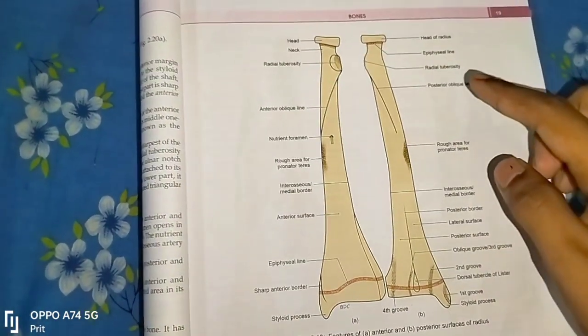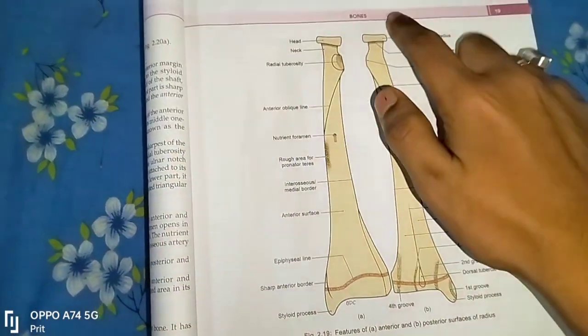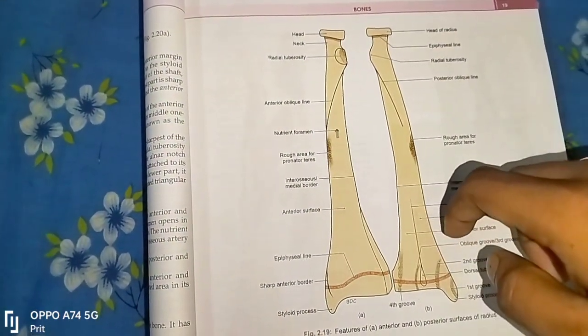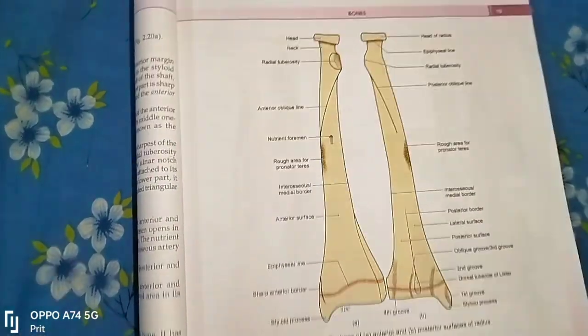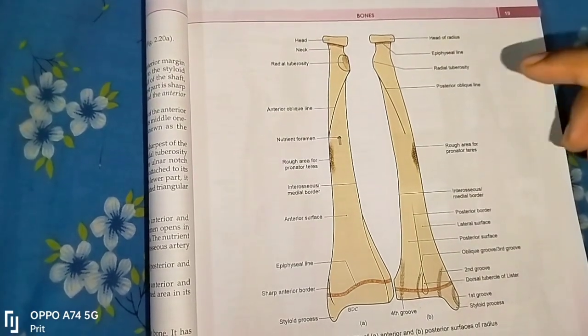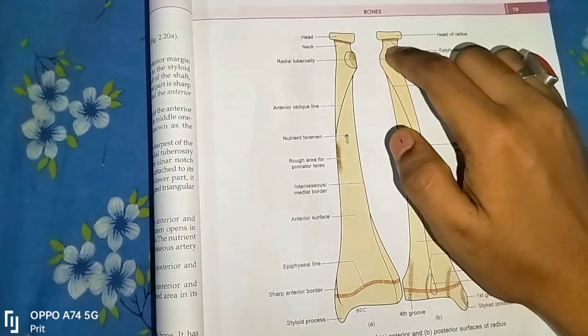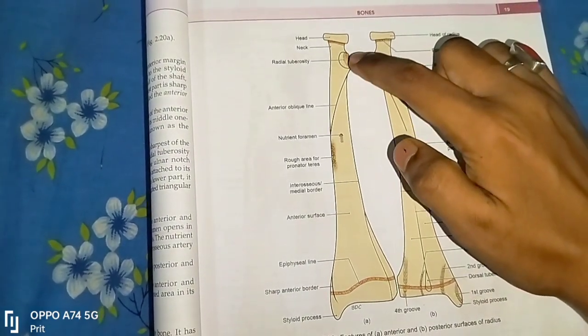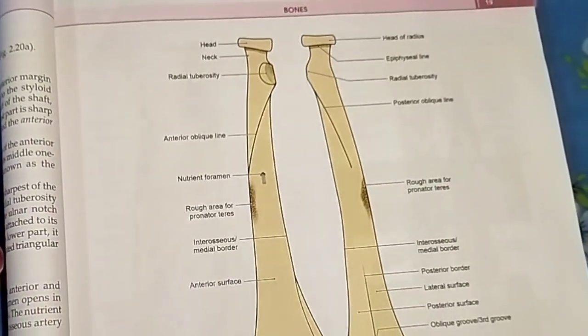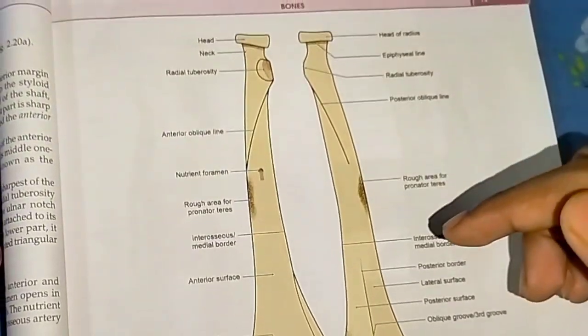The radius bone has two ends, upper end and lower end, and a shaft. The upper end has three parts: the head, the neck, and the radial tuberosity. The lower end has three surfaces: the anterior surface, the posterior surface, and the lateral surface.